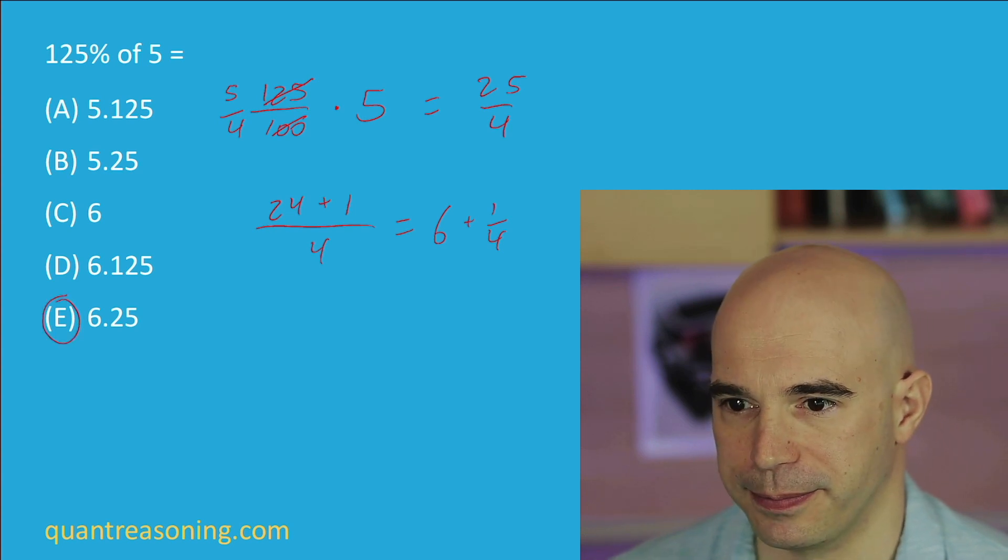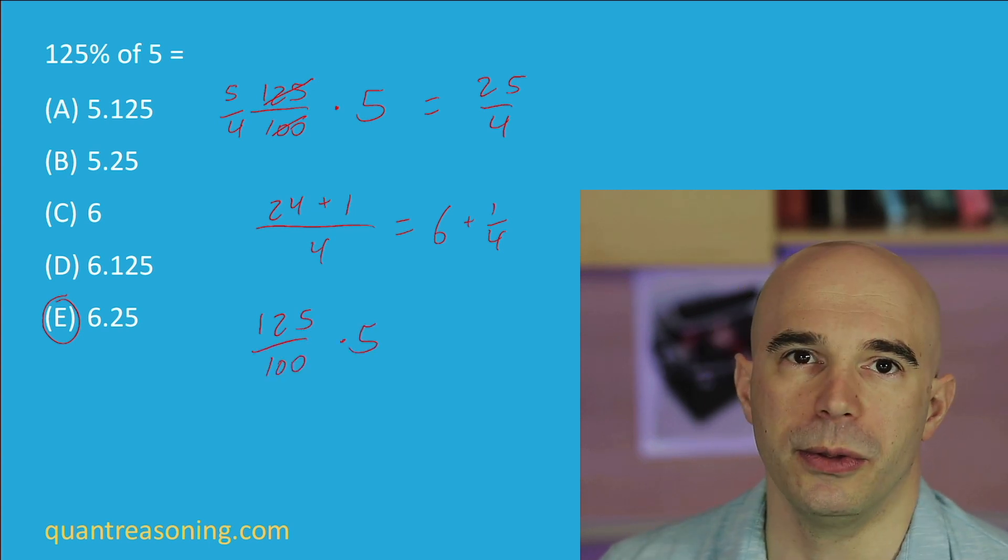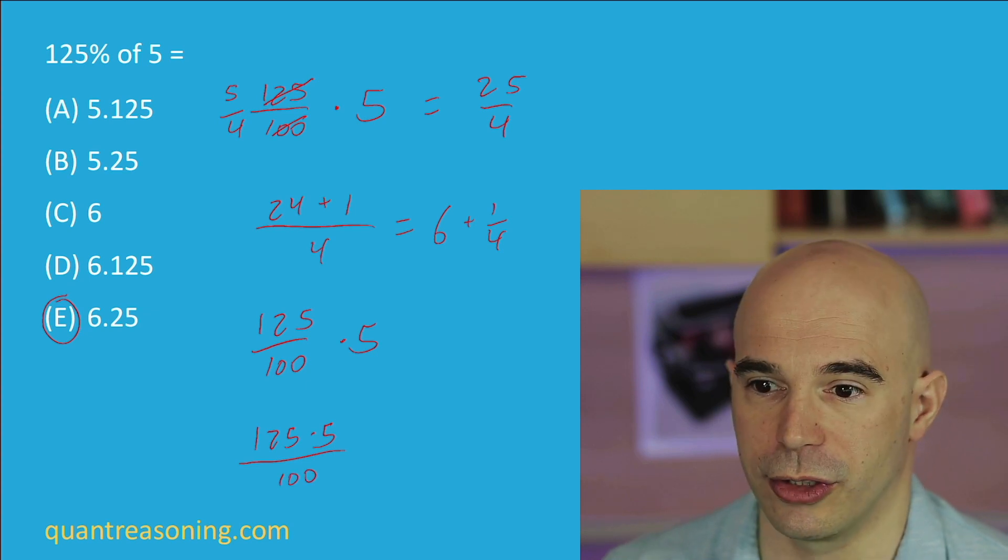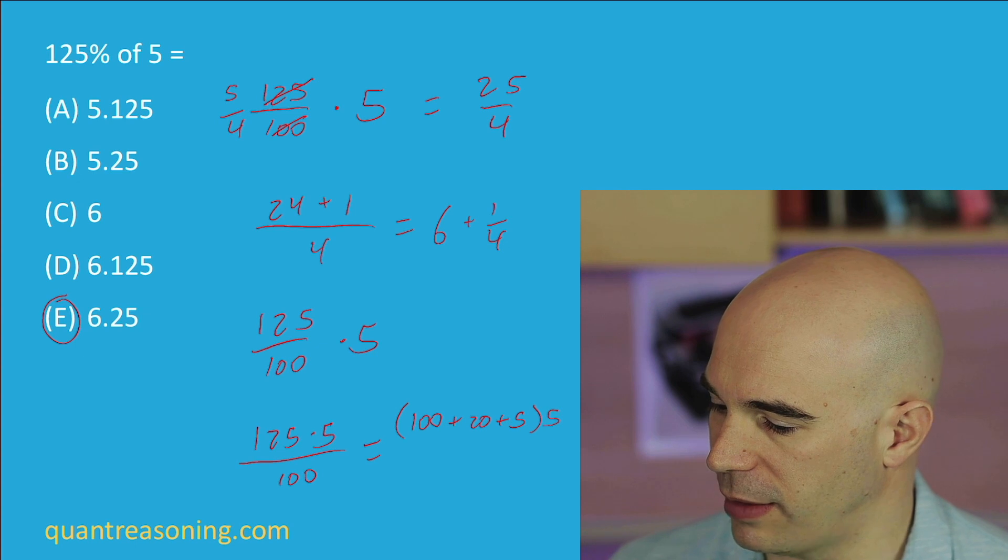So that's one way to solve it. Another way to solve it, going back to 125 over 100 times 5, is to multiply 125 times 5 and then divide by 100. So for some people, maybe this is a better option, depending on your strengths and weaknesses. So how would I do 125 times 5? I would think of it as 100 plus 20 plus 5 times 5.